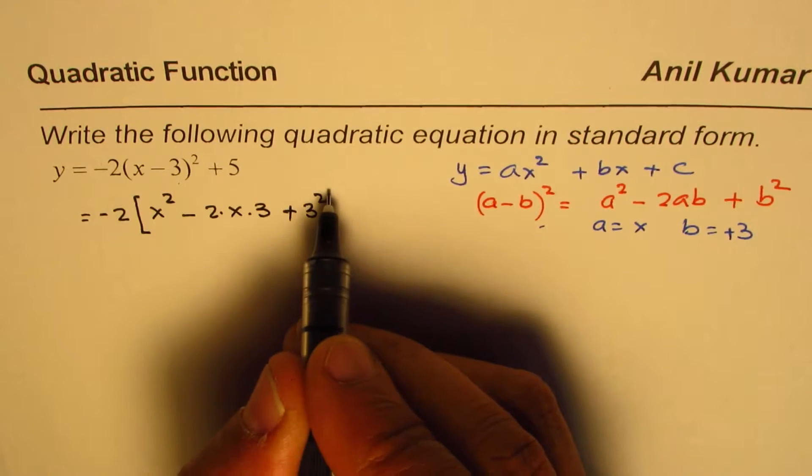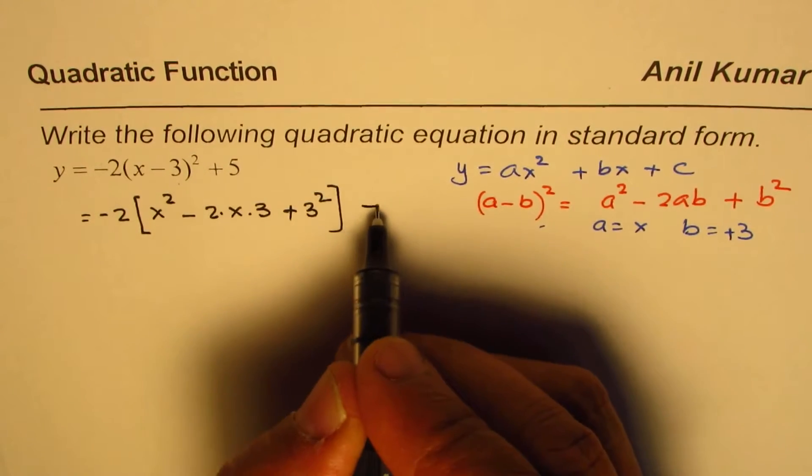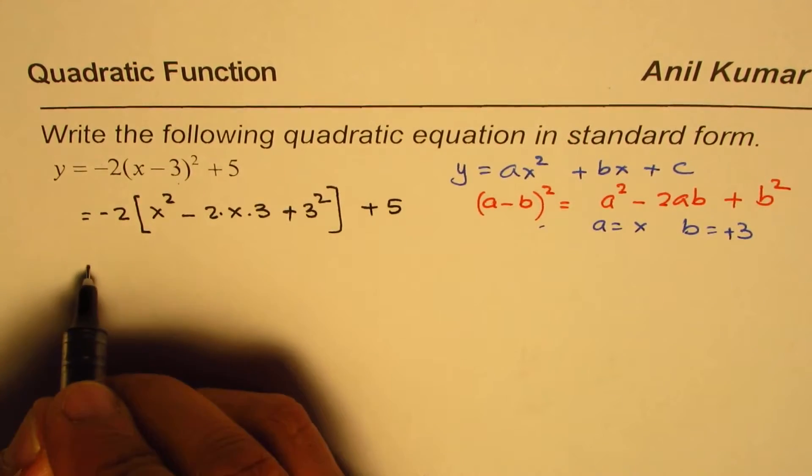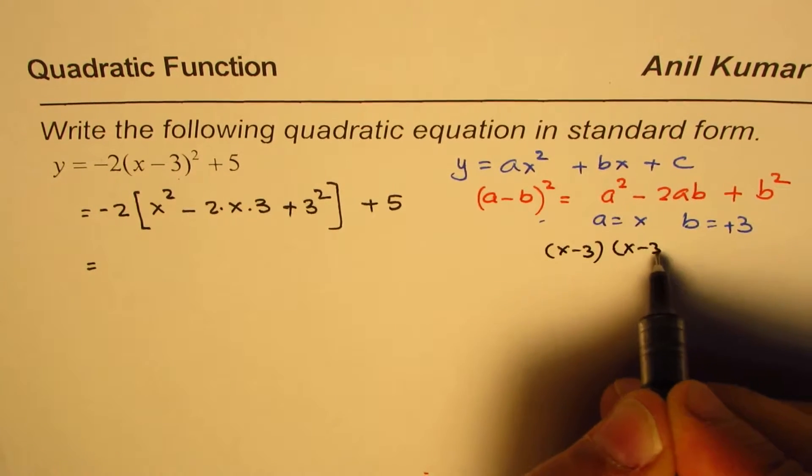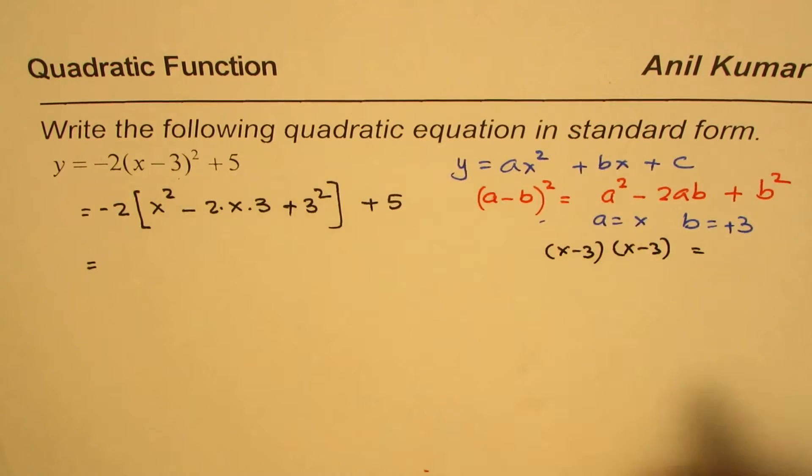So that is the expansion of x minus 3 whole square, and then we'll add 5 to it. You could also do x minus 3 times x minus 3 and get the same result.